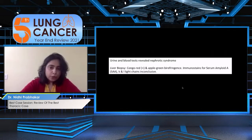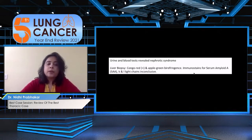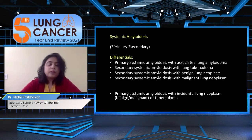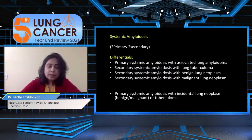What could not be determined was the amyloid protein type — whether it was serum amyloid A, or kappa or lambda light chains. That remained inconclusive, so they were unable to determine whether it was primary or secondary amyloidosis. It was confirmed that the patient had systemic amyloidosis.